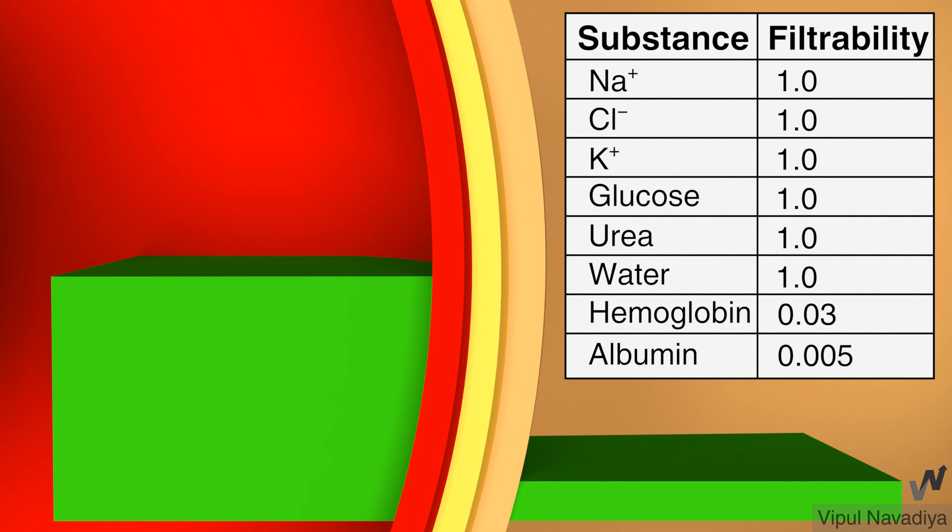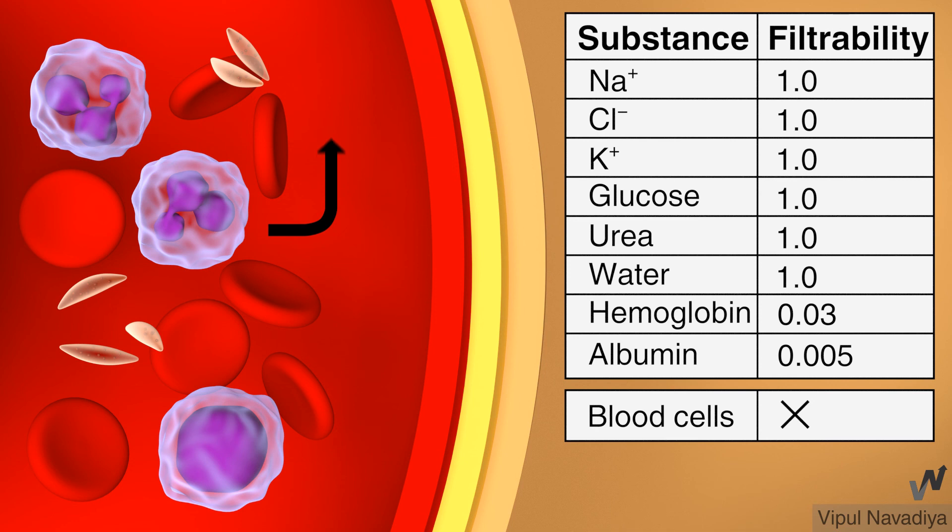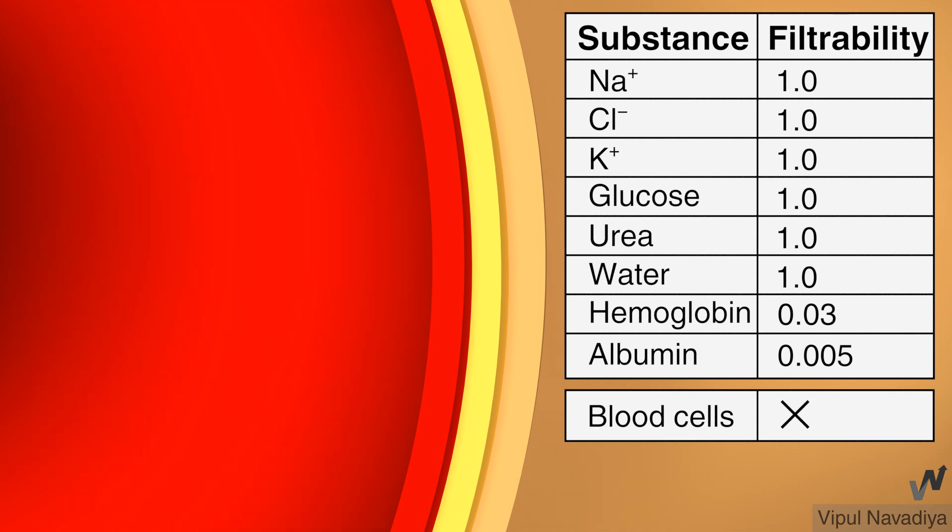Along with protein molecules, other substances bound to them such as lipids are also restricted accordingly. Blood cells of course are not filtered because of large size. In short, filtrate is plasma without plasma proteins. Remember, glomerular filtration is a passive process. So no substance achieves more concentration in filtrate than in plasma. So maximum filterability that any substance can achieve is 1.